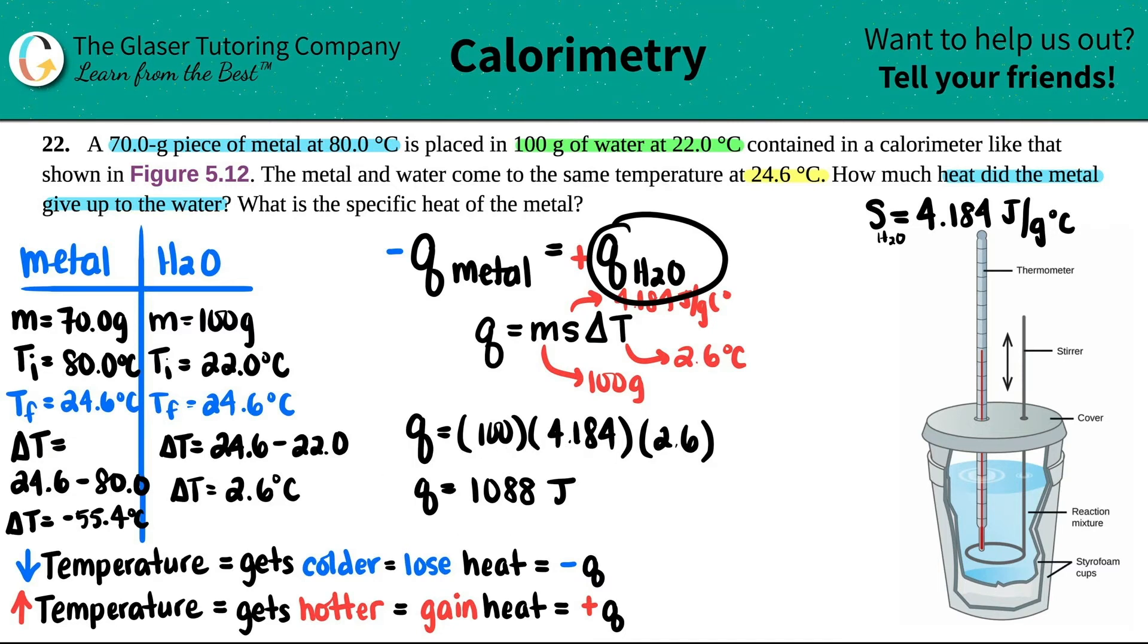That's how much heat was increased to the water. So if this was the amount that was given to the water, how did it get that? Oh, it had to come from the metal. So how much heat did the metal give up to the water? It gave up this much. It gave up 1088 joules.